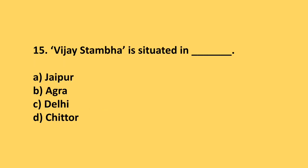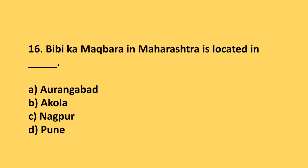Question 15: Vijay Stambha is situated in which place? The answer is option D: Chittorgarh.